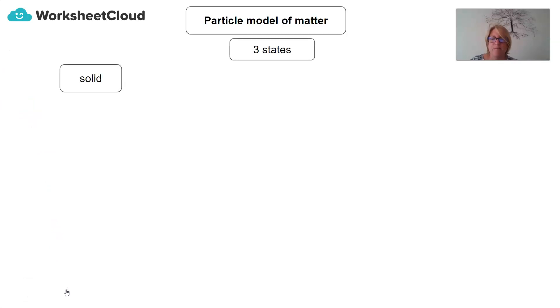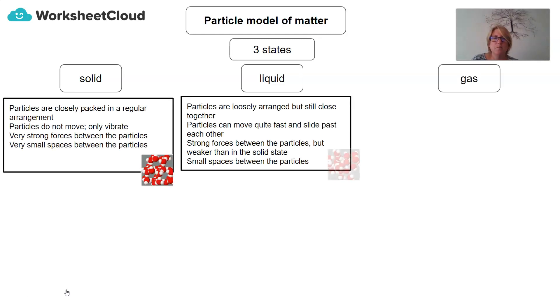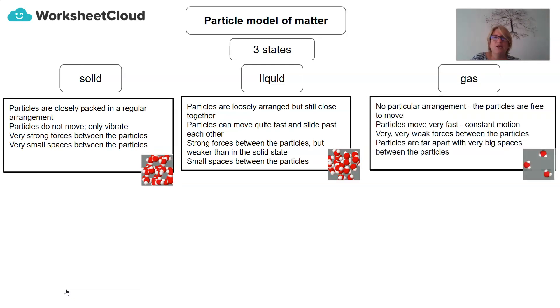So, if we look at the particle model of matter, we looked at the fact that there were three states of matter: solid, liquid, and gas. And just to recap, in solids, the particles are closely packed in a regular arrangement. The particles do not move. They only vibrate. They're very strong forces between the particles, and there are very small spaces between the particles.